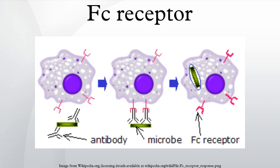For example, those that bind the most common class of antibody, IgG, are called FC-gamma receptors; those that bind IgA are called FC-alpha receptors; and those that bind IgE are called FC-epsilon receptors.